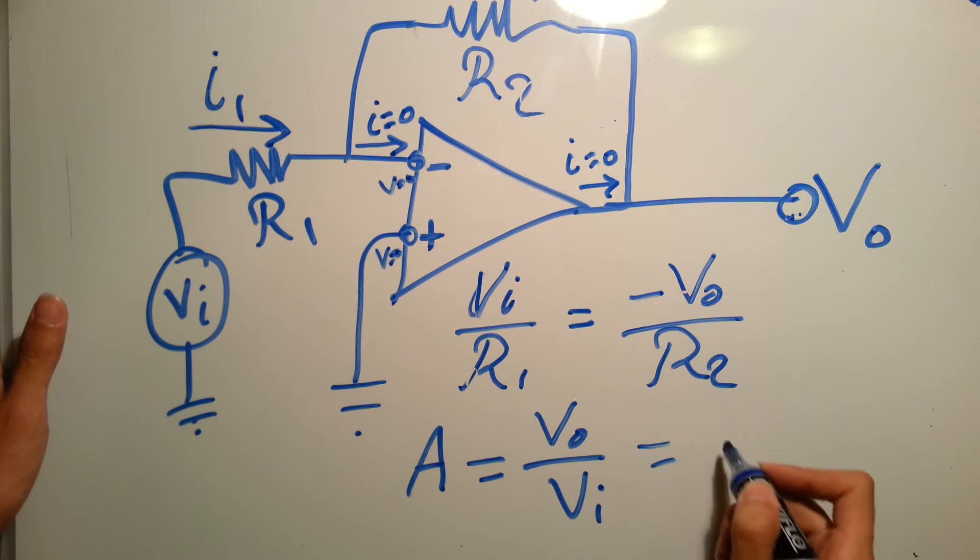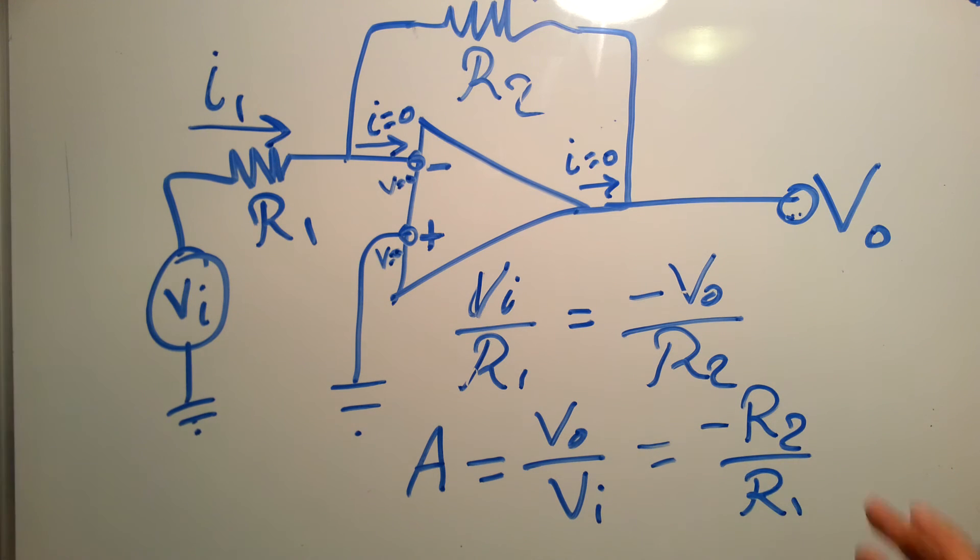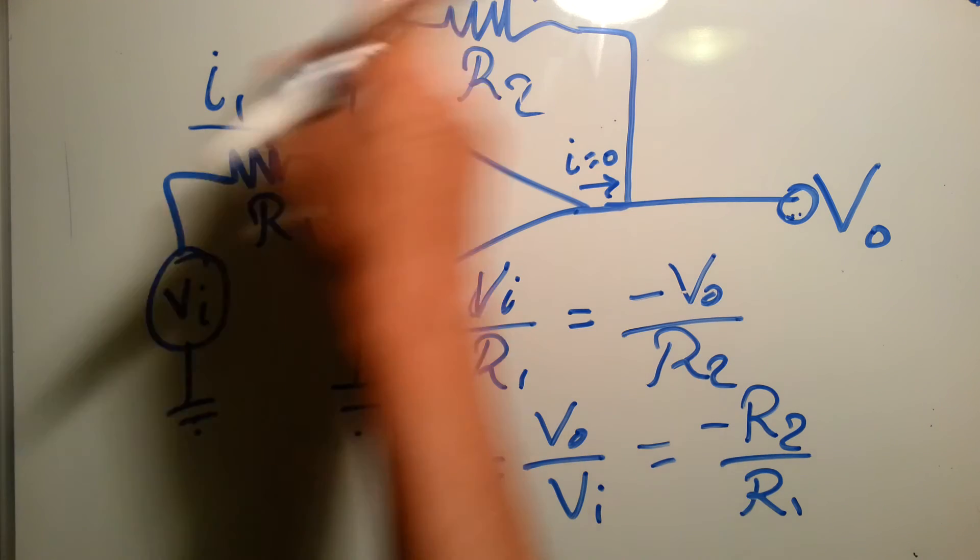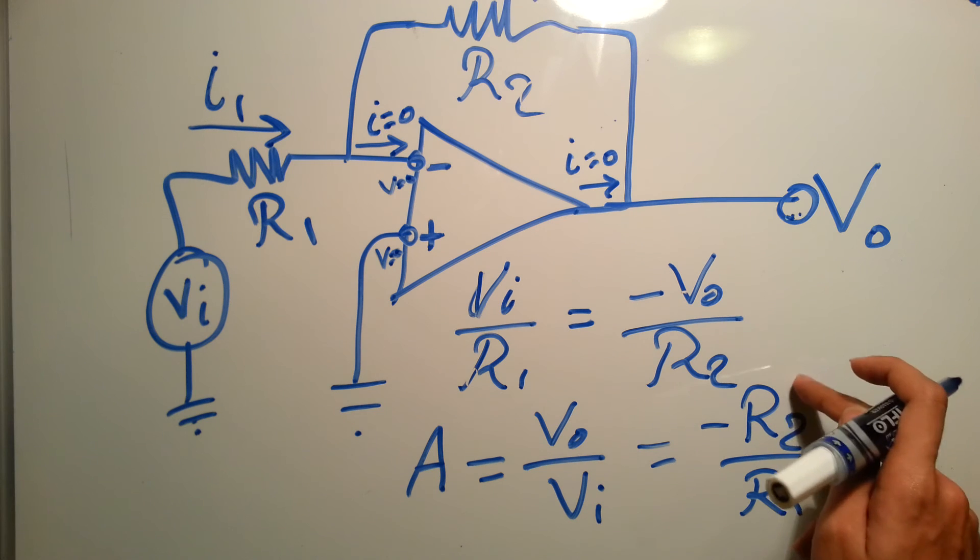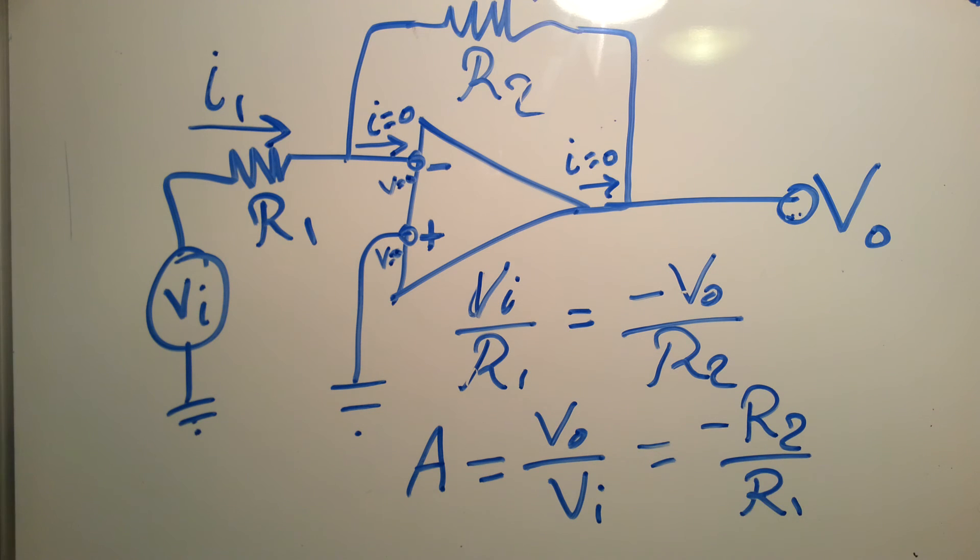So we directly know that this type of op-amp is an inverter with gain equals R2 over R1. And inverter means it must have a minus. So for example, if V in was